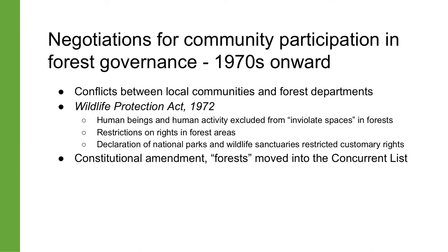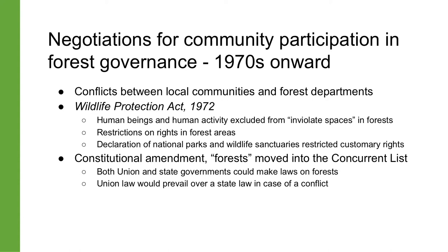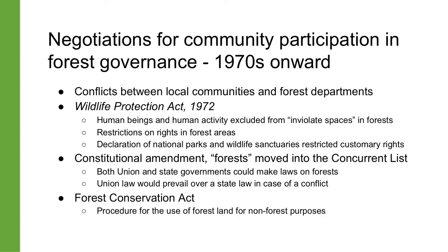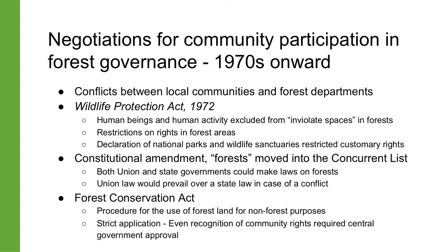Around the same time, the subject of forests was moved through a constitutional amendment into the concurrent list of the constitution. This meant that even though both the union and the state governments could make laws on forests, a union law would prevail over a state law in case of conflict. The union government used its new powers to pass the Forest Conservation Act, which put in place a procedure for the use of forest land for non-forest purposes. The strict application of this law meant that even any process of recognizing rights that already existed hit this legal roadblock, because it came to be treated as a diversion for a non-forest purpose.